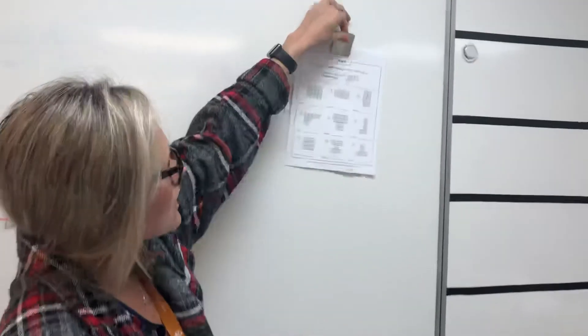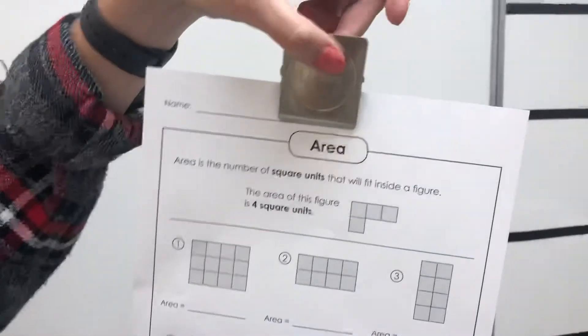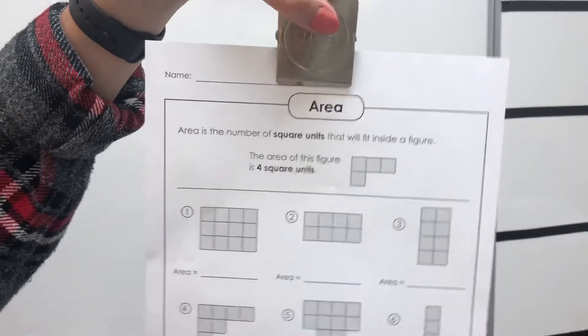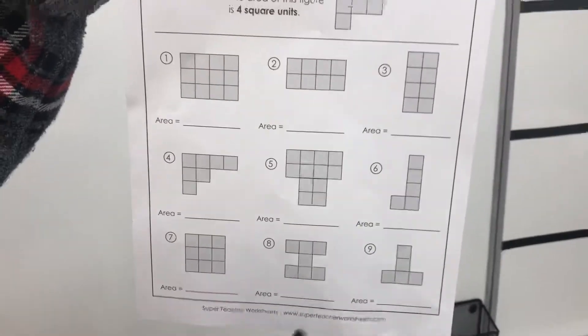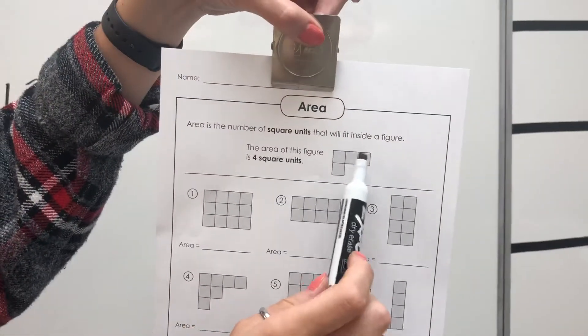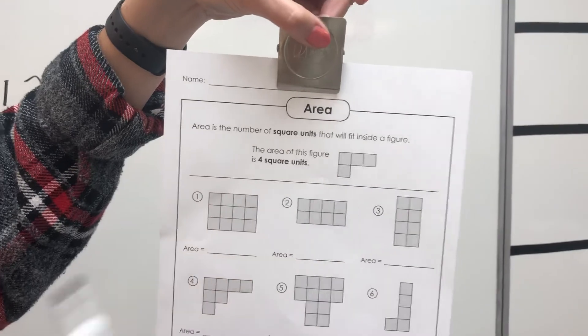The next worksheet that you're going to be working on is called area. You're literally figuring out the area of each object. So if you look at this one, it's 1, 2, 3, 4. So it's four square units of area.